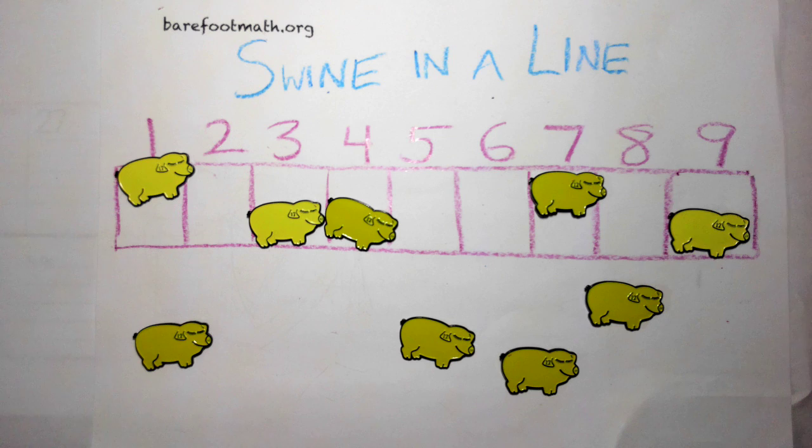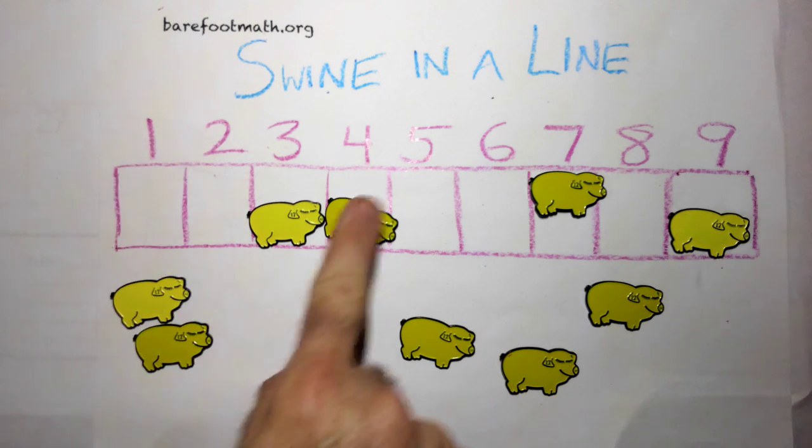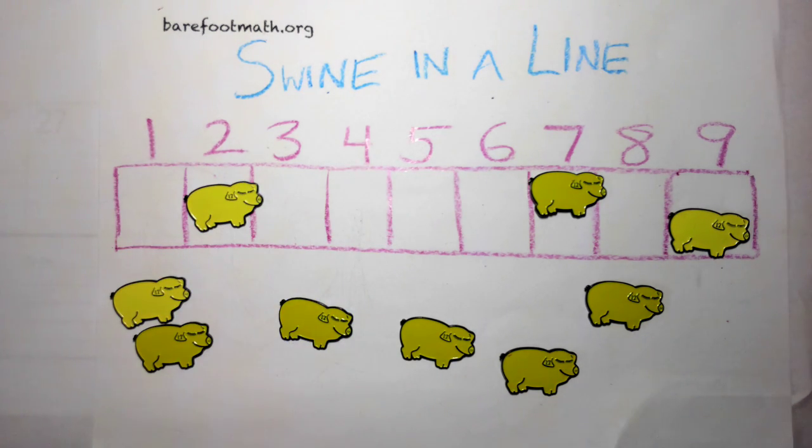Can you figure out how to win this game? For instance, if it's your turn to move, and there are pigs in pens 2, 7, and 9, what's the best move? It turns out there's only one winning move.